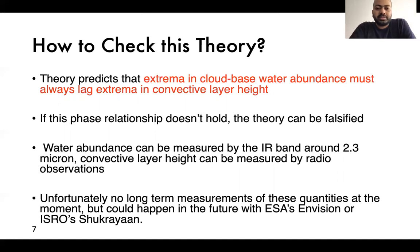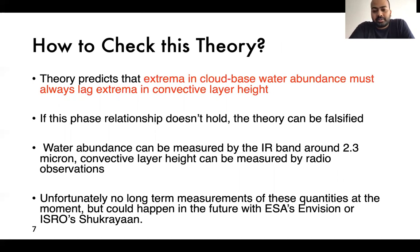The major falsifiable prediction from this theory is that the maxima or minima in cloud-base water abundance must always lag the corresponding maxima or minima in convective cloud layer height. If this phase relationship does not hold, then this theory is not true and there is some other mechanism at work. The water abundance at the cloud base can be measured by near-infrared bands around the 2.3 micron region, and the convective layer height can be measured by radio observations.